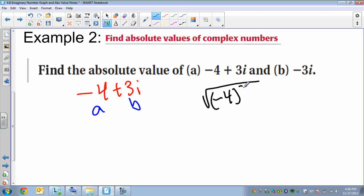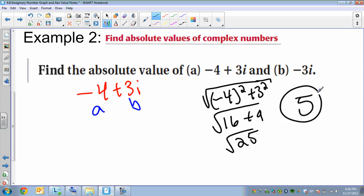4 squared is 16, 3 squared is 9, the square root, those are 25. So our answer for letter a is 5. It's the absolute value of this, so with the bars around this, is 5. That's our answer for letter a.